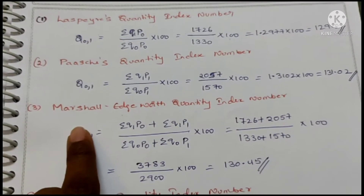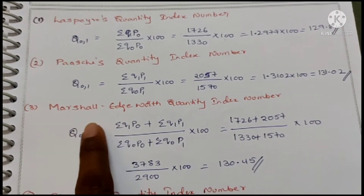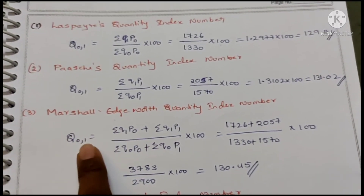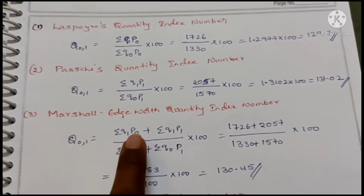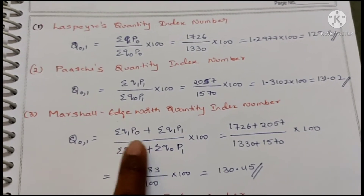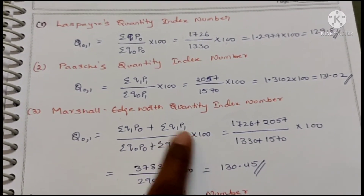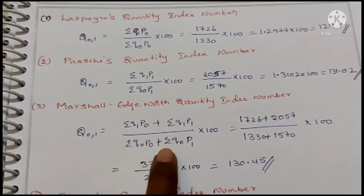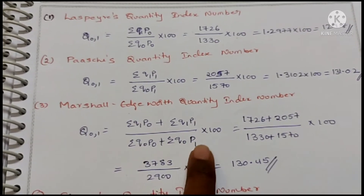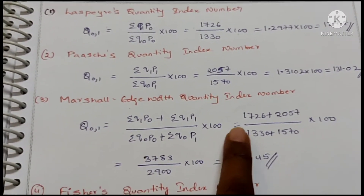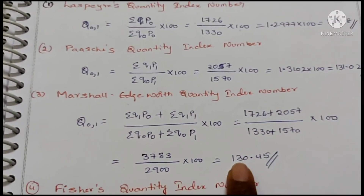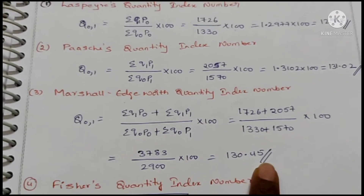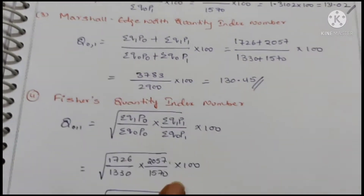Marshall formula: Q01 = (ΣQ1P0 + ΣQ1P1) / (ΣQ0P0 + ΣQ0P1) × 100. Substituting the calculated sigma values, the answer comes to 130.45.